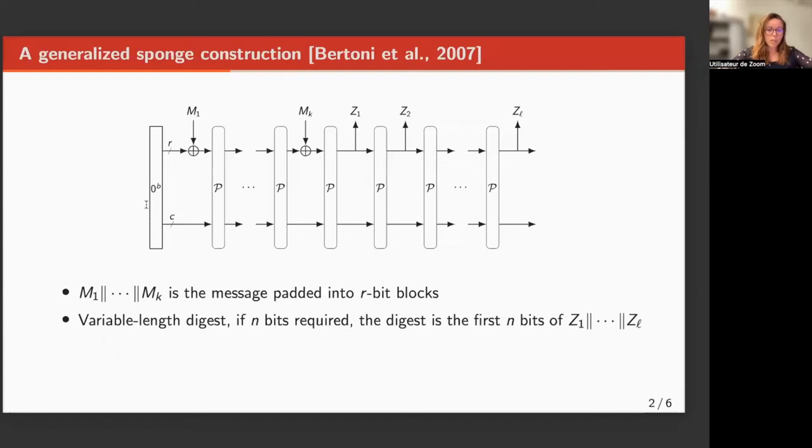Then we have the inner part. It comprises c-bits. C is called the capacity, and this is a security parameter of the sponge. We will restrict ourselves to the case where the digest size is fixed to n-bits, and we denote by L the number of required squeeze calls in order to extract the digest.